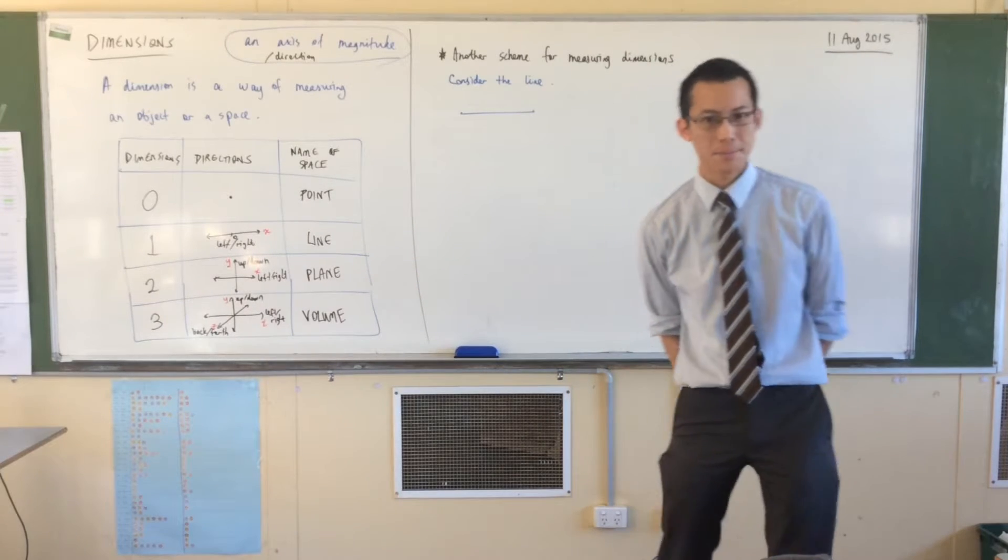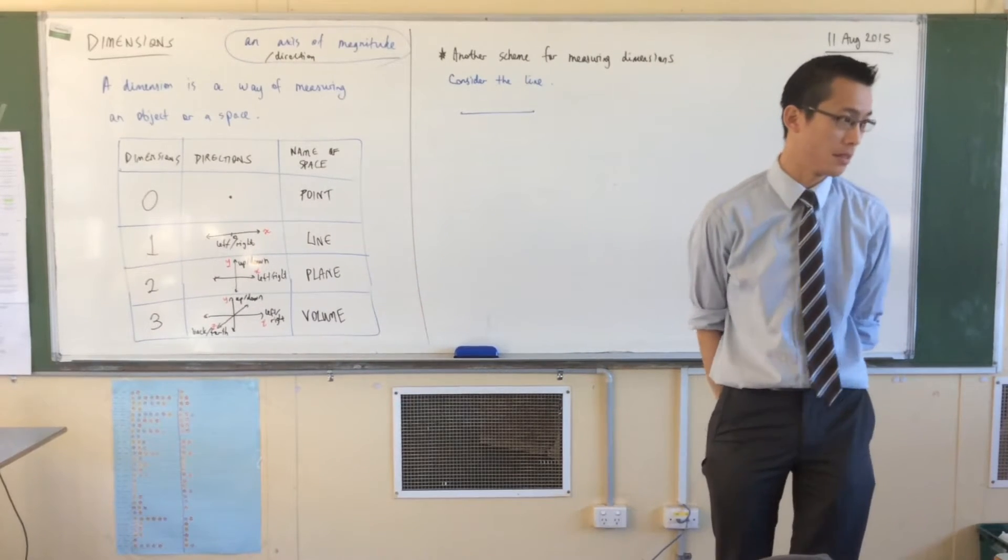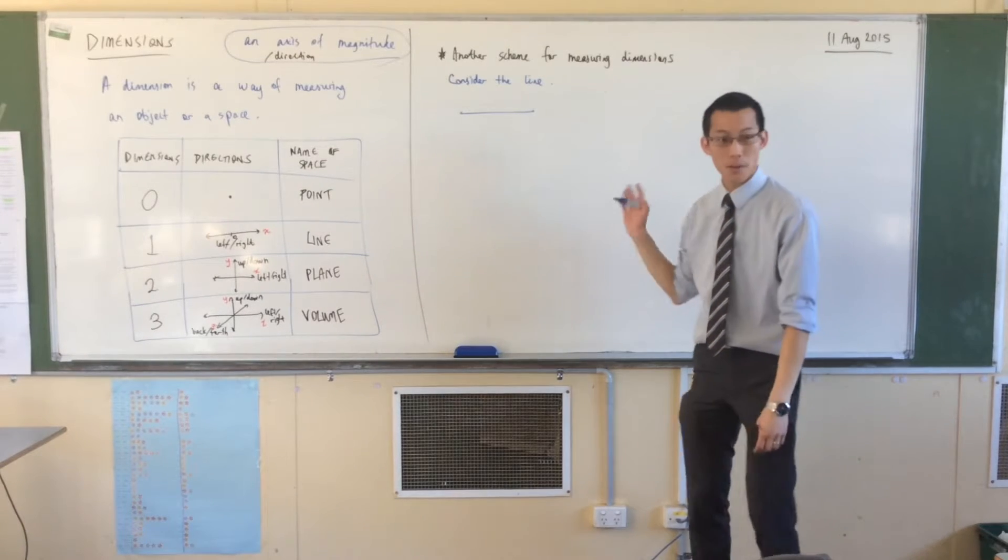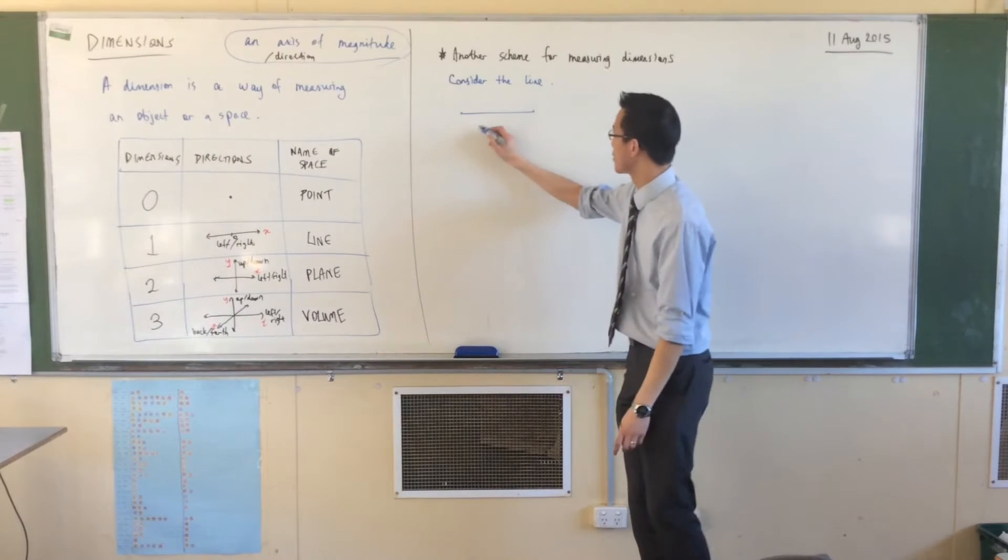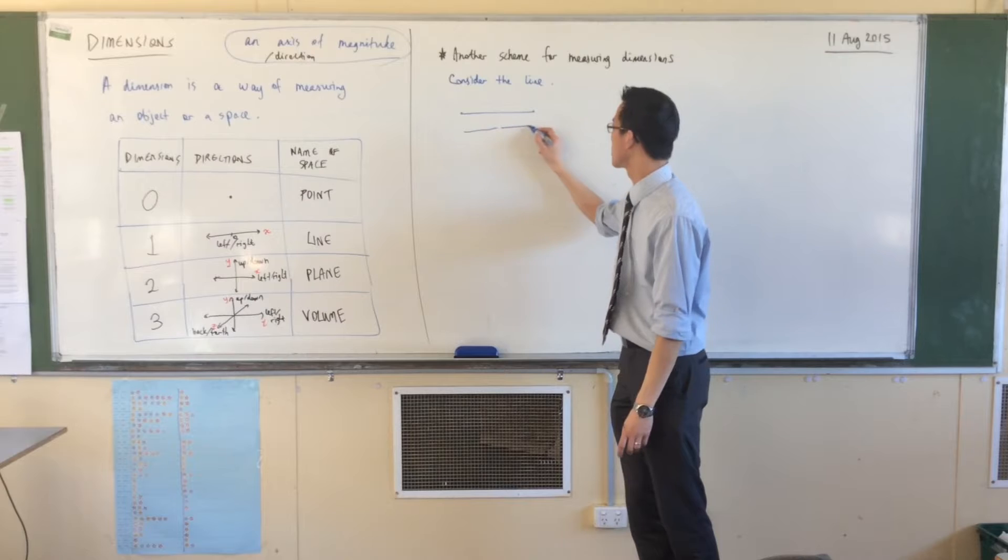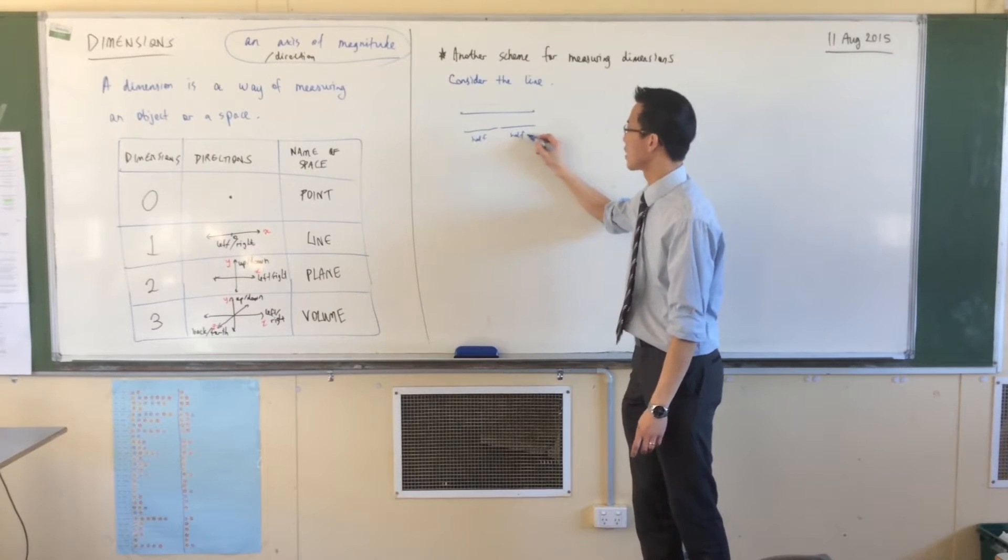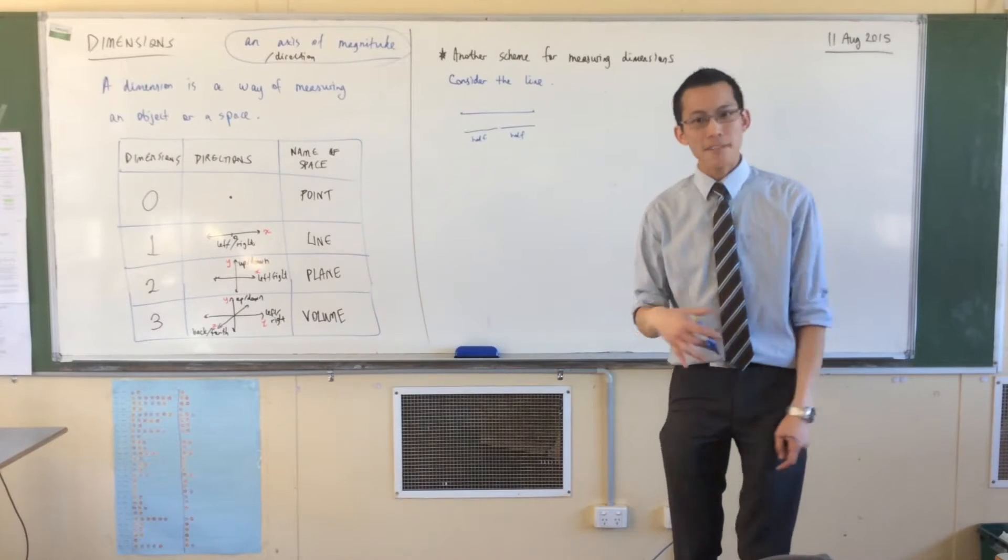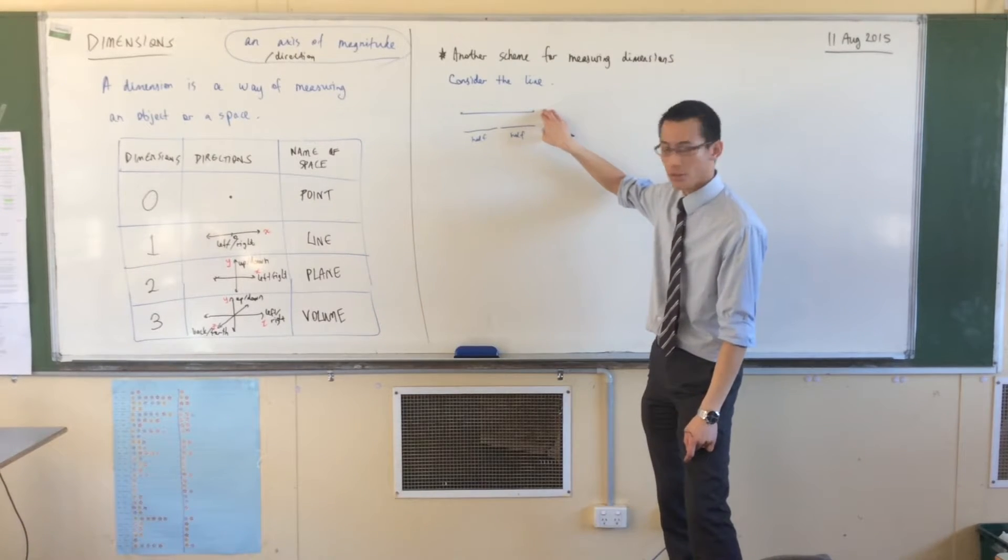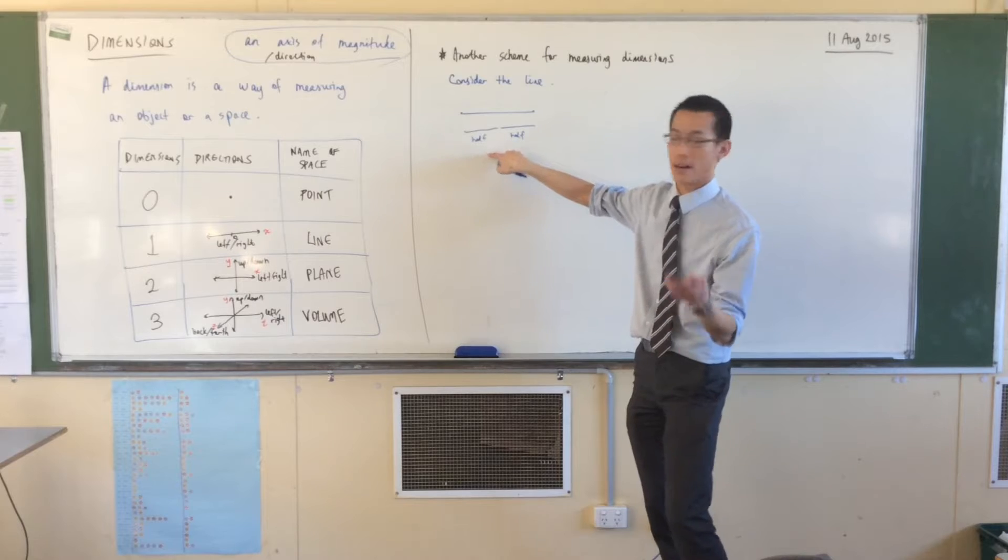If I divide this line into two pieces that are of equal length, that are both half, right? So if I divide it up like this, okay, so this is half and this is half. I have divided up the line, the interval, into two objects that are half the size.